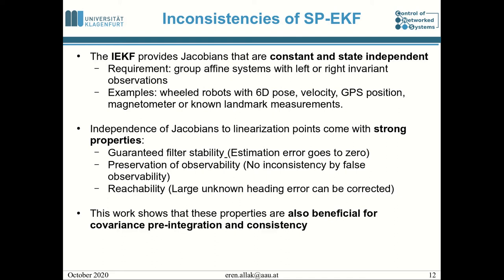This independence from linearization points comes with very strong properties. For example, we have guaranteed filter stability, meaning the estimation error will go to zero. We also have preservation of the observability of the system, so we don't get inconsistencies due to false observabilities. We also have reachability — for example, if we move with an unknown heading for five meters and finally receive global information, the update corrects the pose on a circle rather than on a linear basis. The IEKF formalism is also beneficial for covariance pre-integration and its consistency.